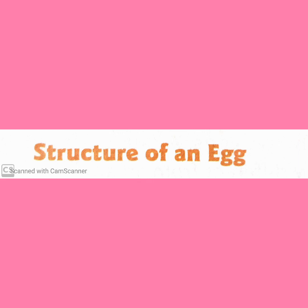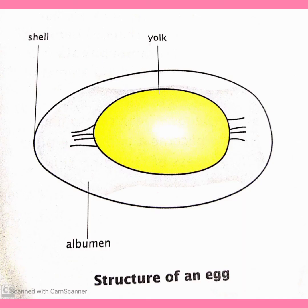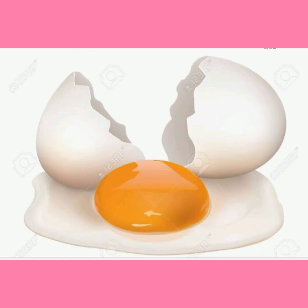An egg has a thin but hard outer covering called the egg shell. This egg shell is hard to protect its inner soft parts. Inside the egg shell, there is a white jelly-like substance called albumin.